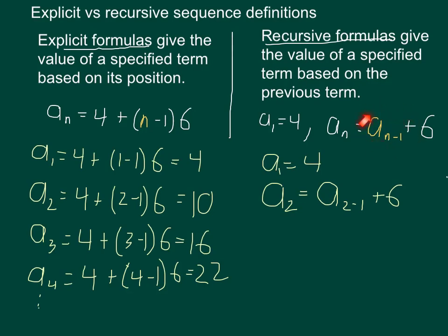This a sub n minus 1 represents the previous thing. We can see that because a sub n minus 1, in this particular case, is a sub 2 minus 1. A sub 2 minus 1, of course, 2 minus 1 is 1. So here we're actually referring to a sub 1. The previous term, a sub 1, which is 4. Therefore, a sub 2 is 4 plus 6, which is 10.